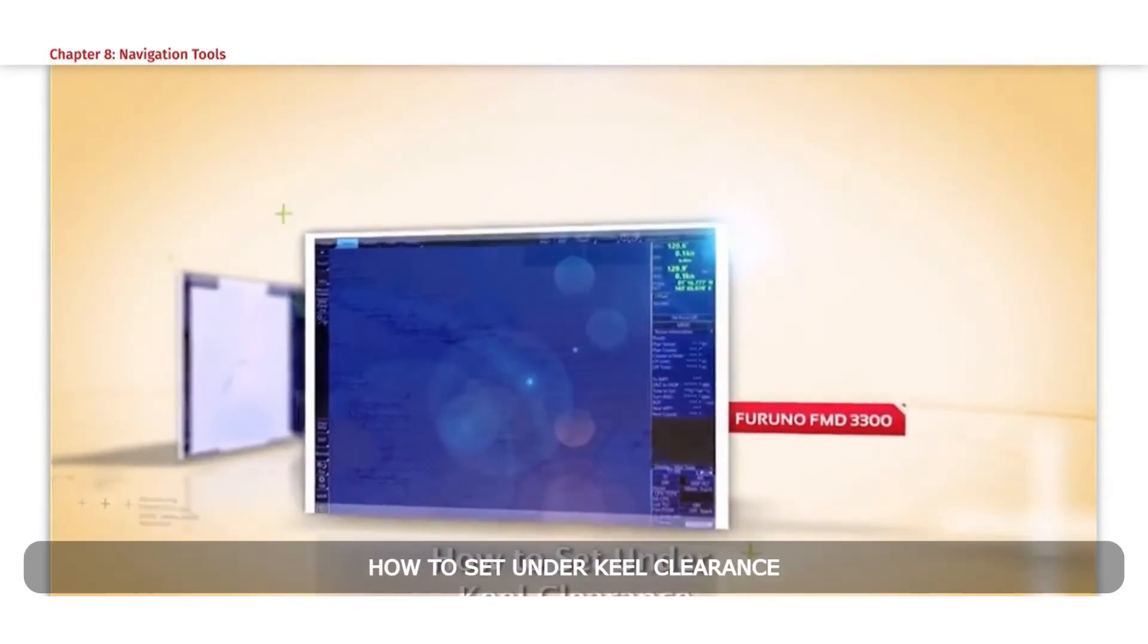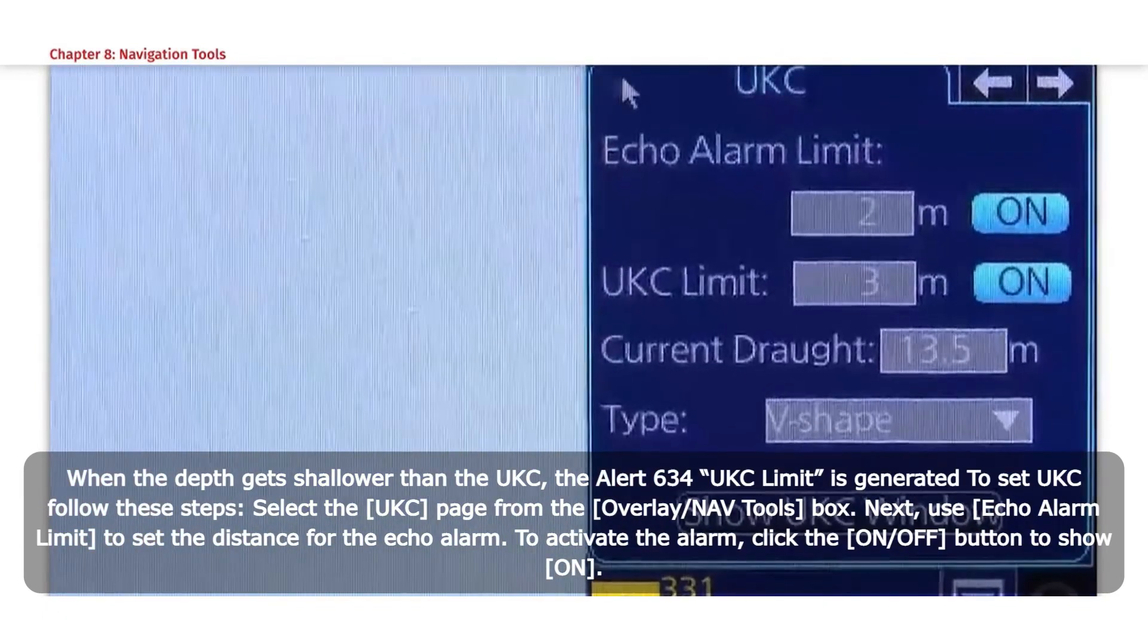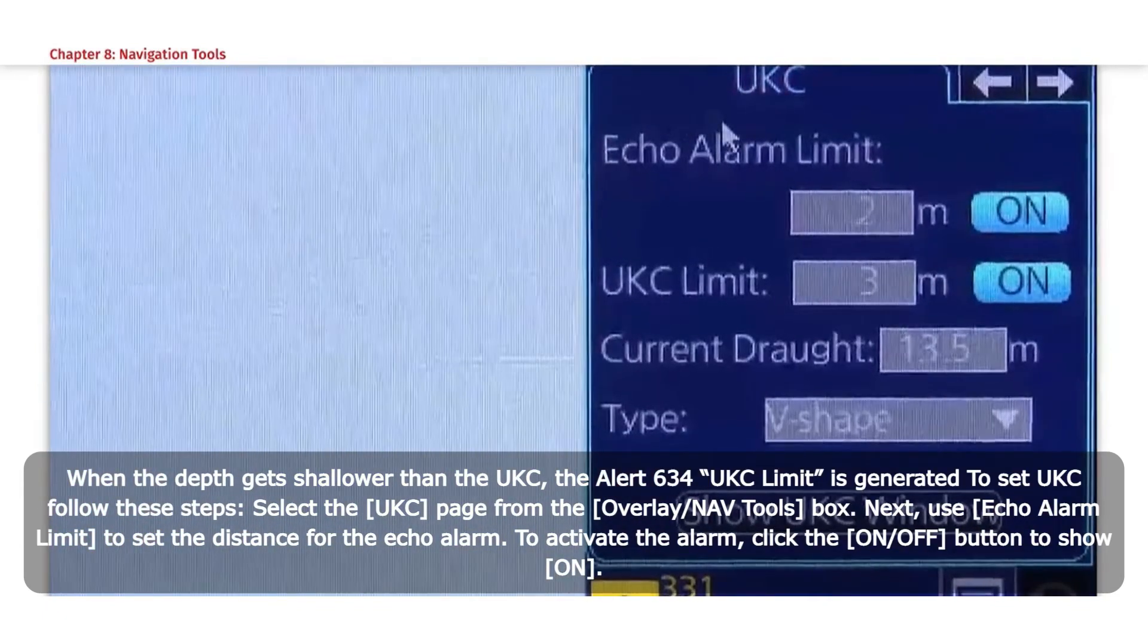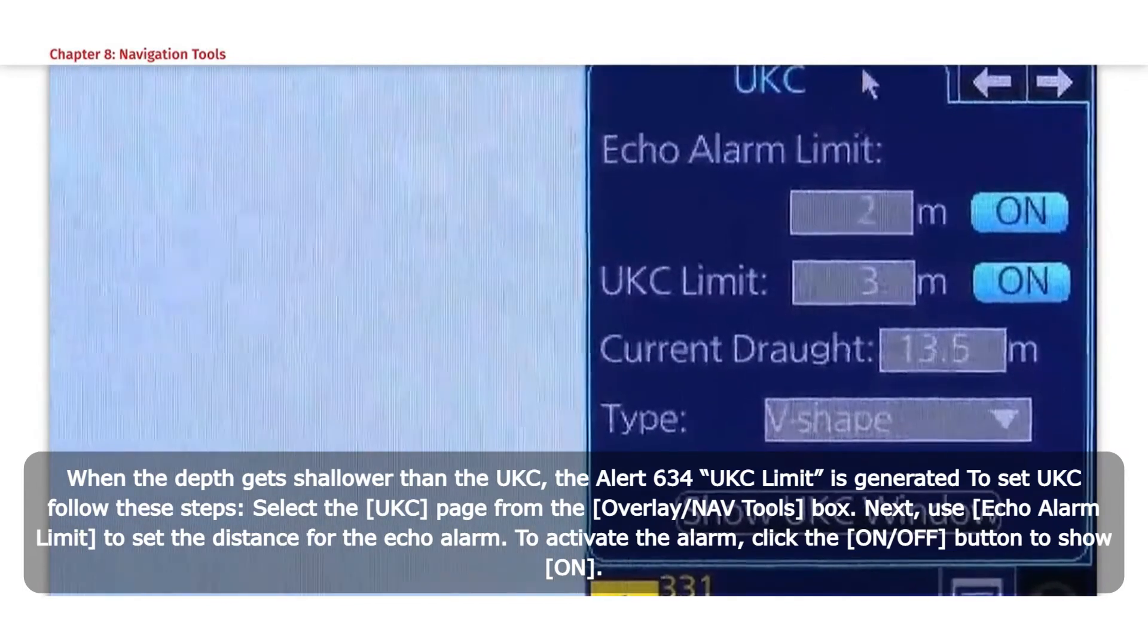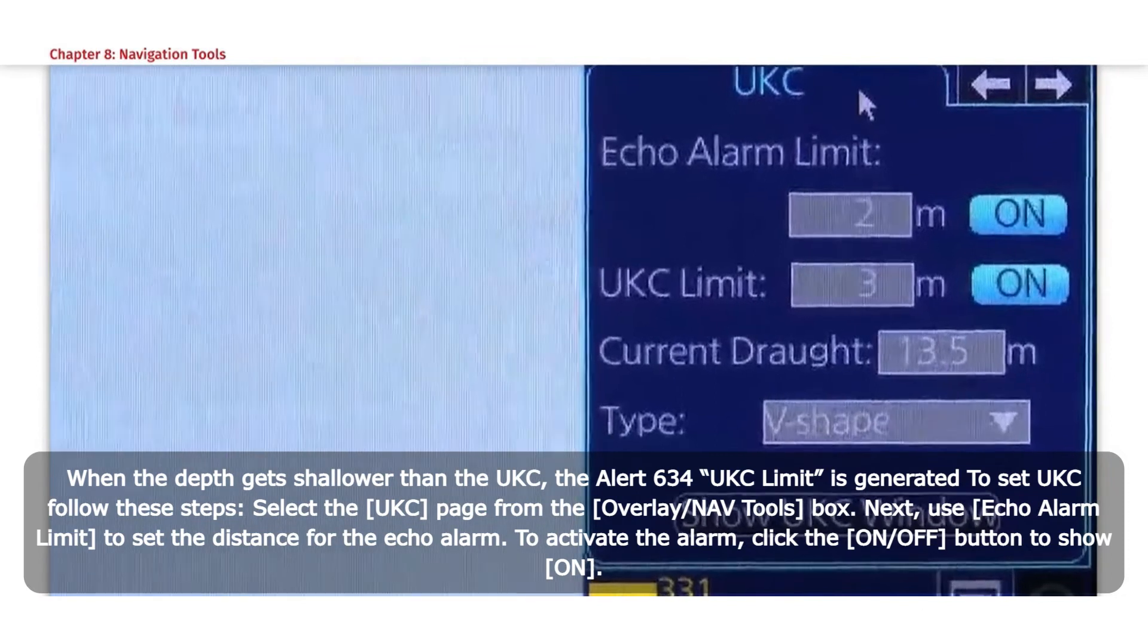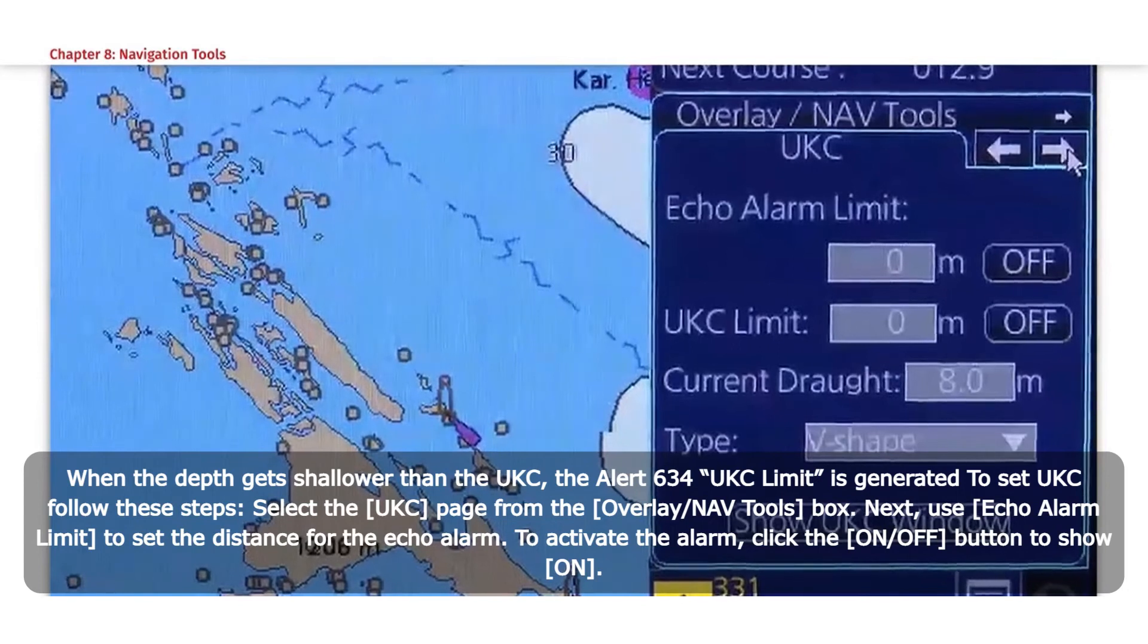How to set Underkeel Clearance: When the depth gets shallower than the UKC, the Alert 634 UKC limit is generated. To set UKC, follow these steps. Select the UKC page from the Overlay or Nav Tools box.